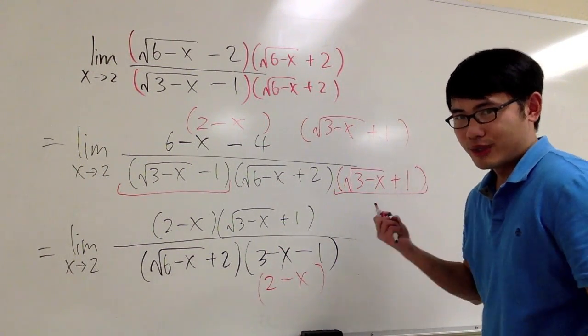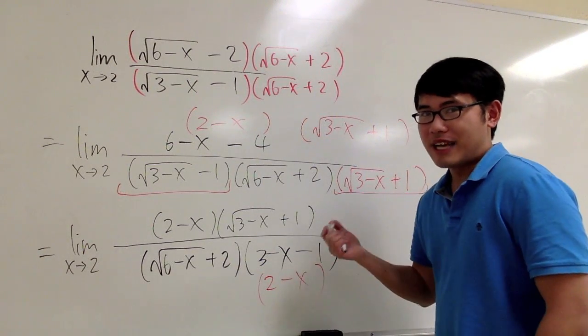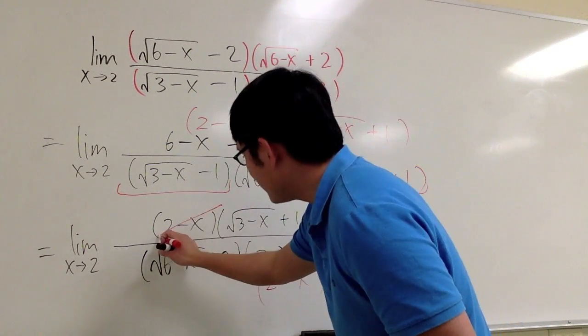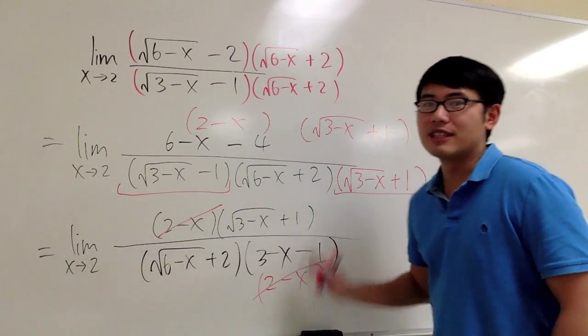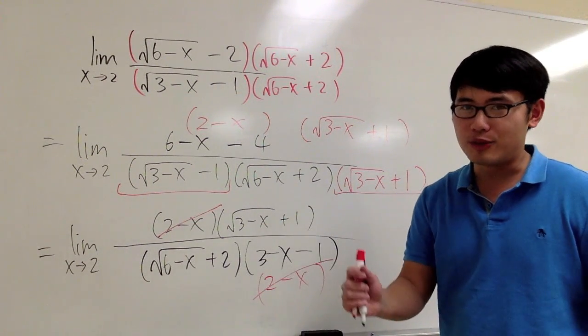And guess what? As I told you, good things usually happen. And most of the time, you will have it. 2 minus x and 2 minus x cancel each other out. Something on the top cancel something on the bottom. And you know you're on the right track.